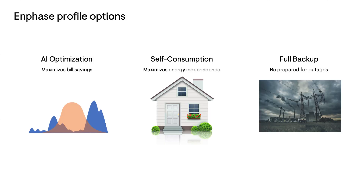Now let's review the available Enphase profiles or operating modes so you can select the option that best suits your goals. The profile options are AI optimization, self-consumption, and full backup. AI optimization maximizes bill savings, self-consumption maximizes energy independence, and full backup keeps your system prepared for a power outage. The full backup profile is only available for systems with backup power capabilities.